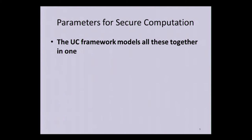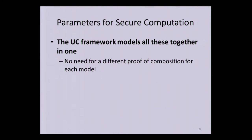One of the things the universal composability framework does is capture all of these models in one — and much more. It's a very general framework and you can capture almost any model you can think of, so the composition theorem is already proven for all possible models we could want to study. We don't need a different proof of composition for every model — as long as you fit into the UC framework, you're already covered.